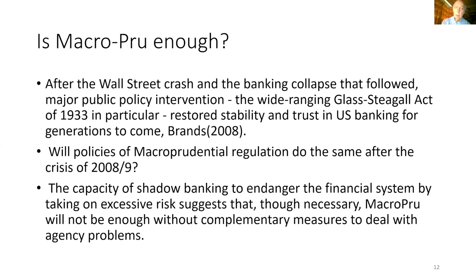The question I want to raise is: is macro-prudential policy enough? Willem Buiter thinks it's too much, but my question is whether it's enough. After the Wall Street crash and the banking collapse that followed, major policy intervention — especially the wide-ranging Glass-Steagall Act — restored stability and trust in US banking for about 50 years or more. Will the policies of macro-prudential regulation do the same after the recent crisis? I'm afraid that the capacity of shadow banking to endanger the financial system by taking on excessive risk suggests that macro-prudential policy will not be enough without measures to deal with the agency problems in banking.